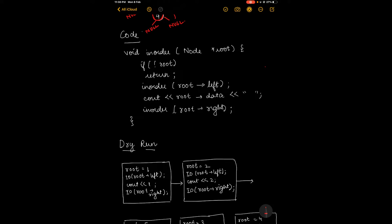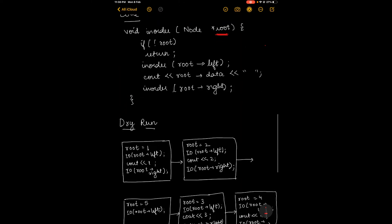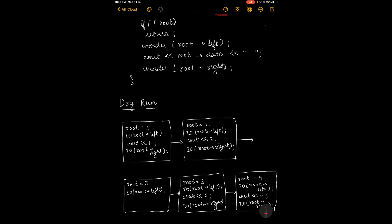This is the in-order function. If root equals null — that is, if there is no root — we'll simply return. Then we call the recursive function in-order with root's left child. Once that is done, we print the root data, and then the right child of the root is passed into the function.